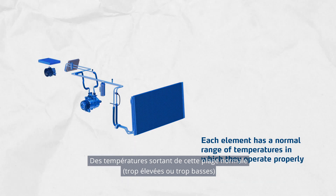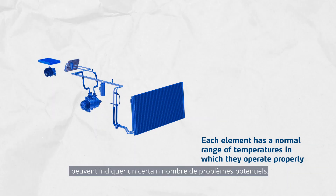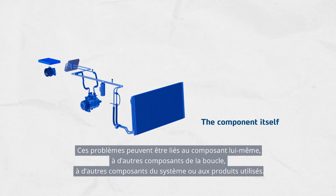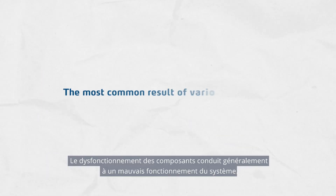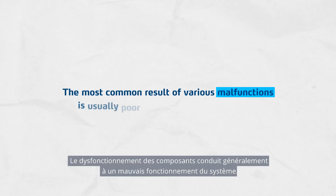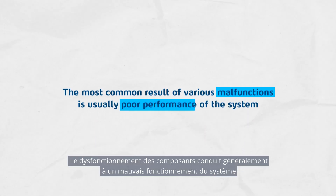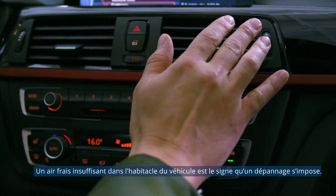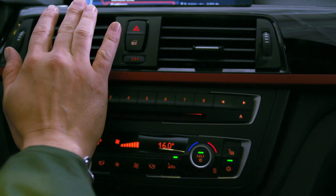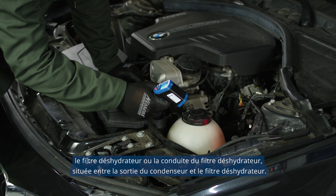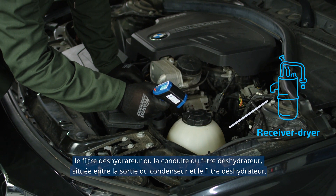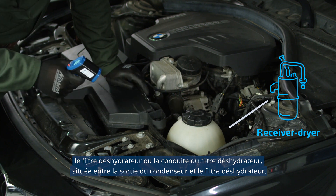Depending on the pressure side where the specific AC loop components are located, each element has a normal range of temperatures in which they operate properly. Temperatures outside of the normal range — too high or too low — can indicate a number of potential issues relating to the components themselves, other components in the loop, and other components in the system or the consumables applied. The most common result of various malfunctions is usually poor performance of the system. Not enough cool air in the vehicle's cabin is a sign to start troubleshooting. Let's have a look at one spot that's easy to access: the receiver dryer, or the line to the receiver dryer, between the condenser outlet and the receiver dryer.